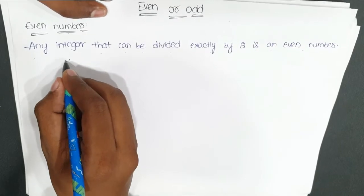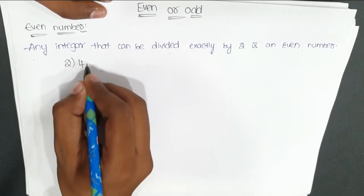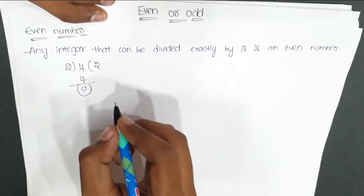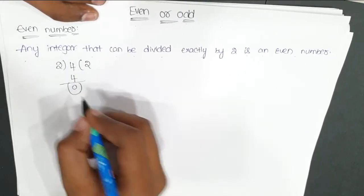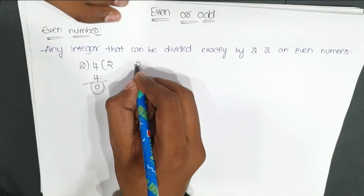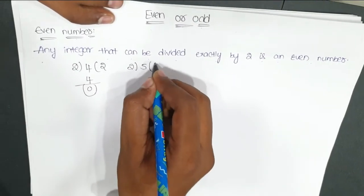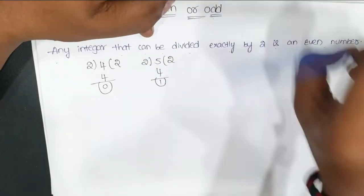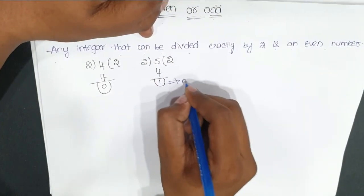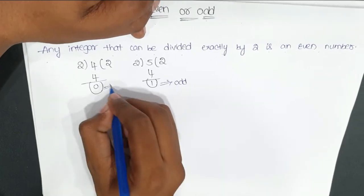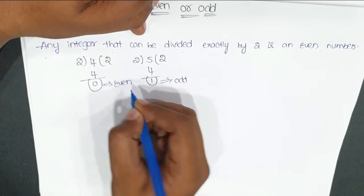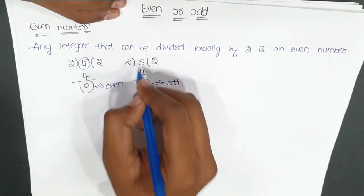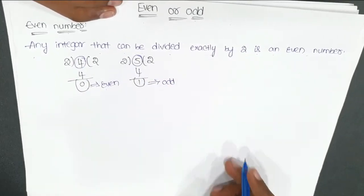Let me explain with two examples. I will take the number 4: 4 divided by 2 gives a remainder of 0, so 4 is an even number. For the number 5, we get a remainder of 1, so 5 is an odd number.